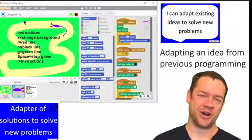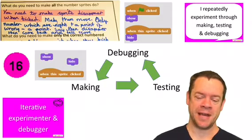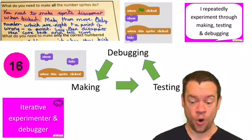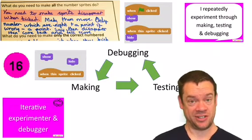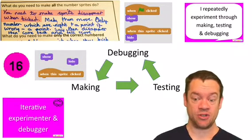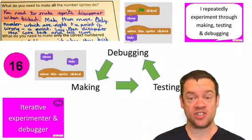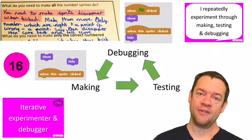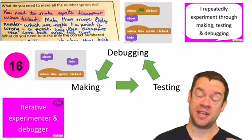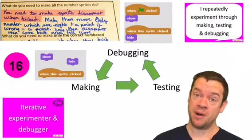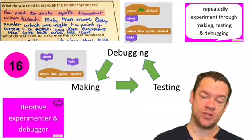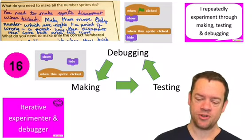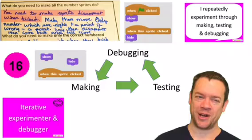Once they've finished decomposing their project and thinking about where is a good place to start, then of course they get out and they start making that quite independently. This is important that they have an attitude of being experimenters and debuggers. This is about understanding that there is an iterative or looping circular process of making something, testing something, and debugging something.